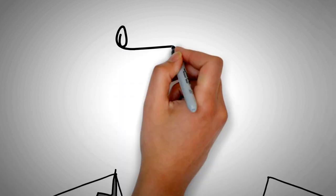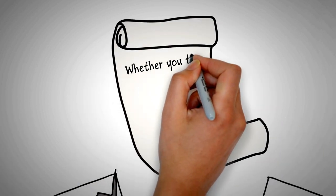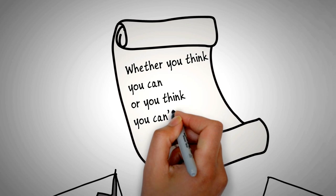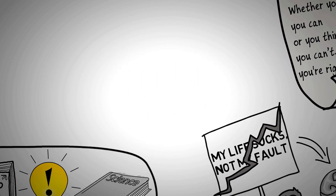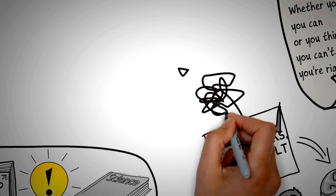One method could be to duplicate the belief systems of successful and happy people. Duplicate their mental syntax. Scramble or rearrange your thoughts to get a different outcome.